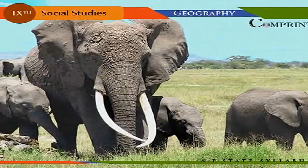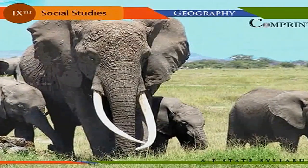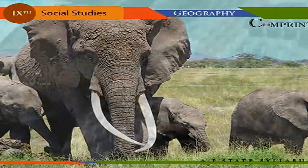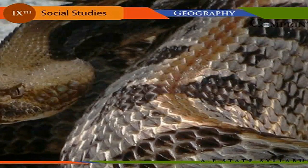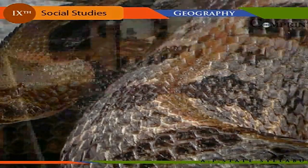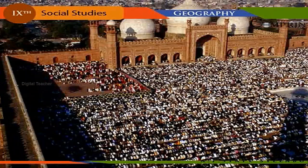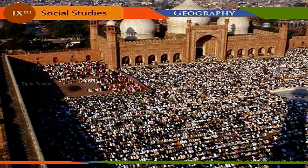The native animal life includes the elephants, the tigers, the king cobra, and in Australia, the kangaroos, besides many other types. More than 25% of the global population lives in the south and southeast Asian countries. However, most of monsoon Australia is largely a sparsely populated area.